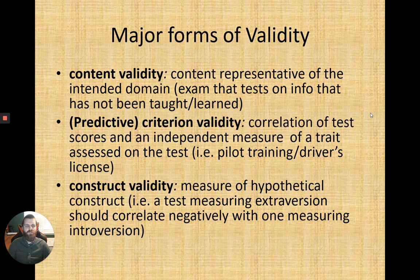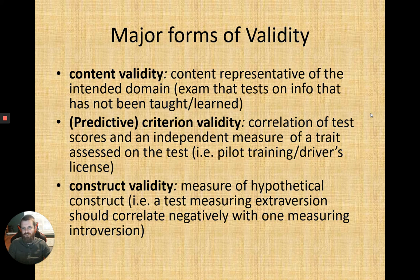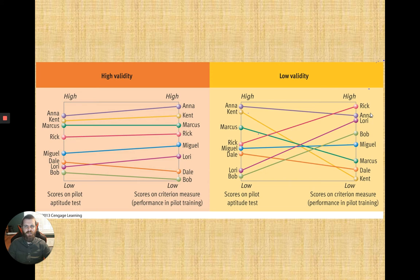Construct validity operates in the realm of hypotheticals. If a test says you're very nice, it's also implying you're not very mean — ranking high in one should mean ranking low in the other. For example, if you rank high in extraversion, you shouldn't also rank high in introversion. There should be a negative correlation in this construct validity.